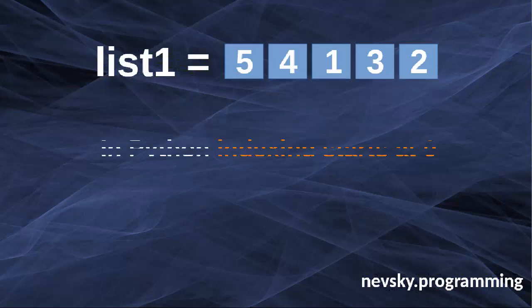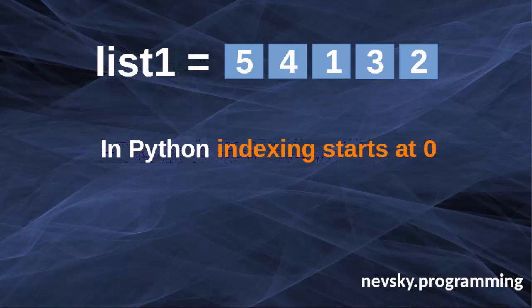We need to know that in Python indexing starts at 0. So if we want to get the first element of our list we're going to use 0 as the index. And if we want to get the second element we're going to use index number 1 and so on.